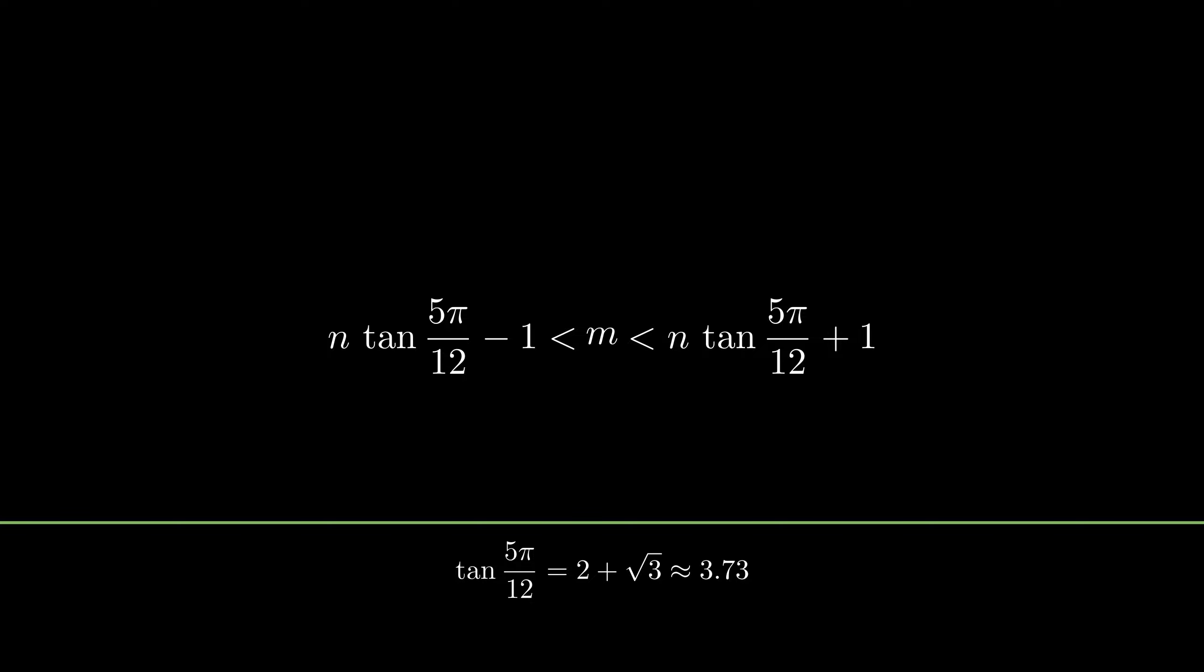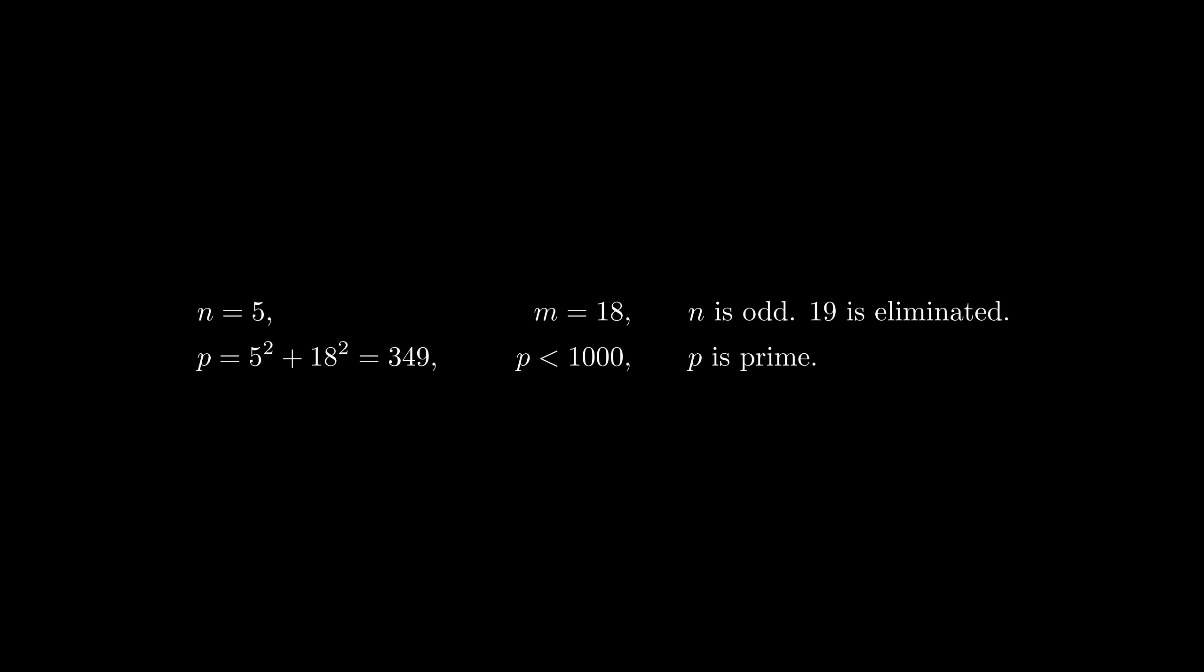Additionally, since p is less than 1000, n cannot be larger than 8. A few calculations for n values less than 9 indicates that the pair of 5 and 18 satisfies all of the requirements.